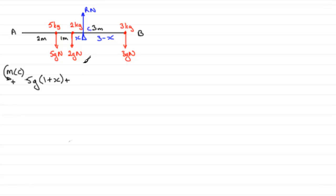Plus the weight, 2G, multiplied by the distance X. Then it would be minus for the 3G newtons. So that would be minus 3G multiplied by that distance, 3 minus X. And because the rod AB is in equilibrium, there's no resultant turning effect about C. So that would equal 0.